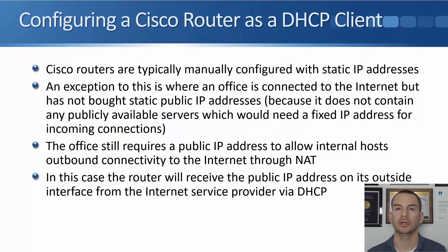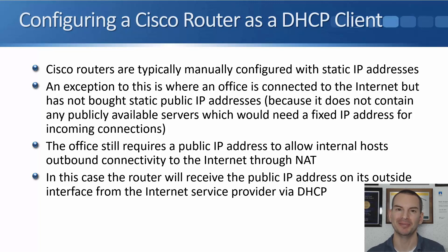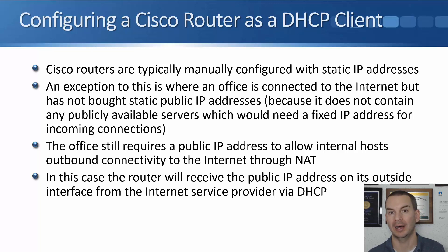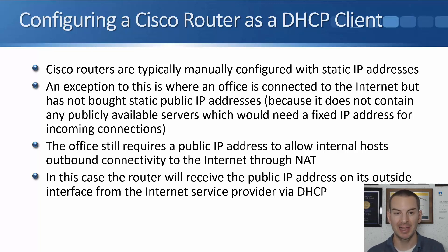In this lecture you'll learn how to configure a Cisco router as a DHCP client. You're maybe thinking, hang on a minute Neil, you just told me a minute ago that routers don't get configured as DHCP clients — they get configured with manual IP addresses. And that is typically what will happen, but there is one fairly common exception to that rule: where a branch office is connected to the internet but hasn't bought any static public IP addresses for that office.